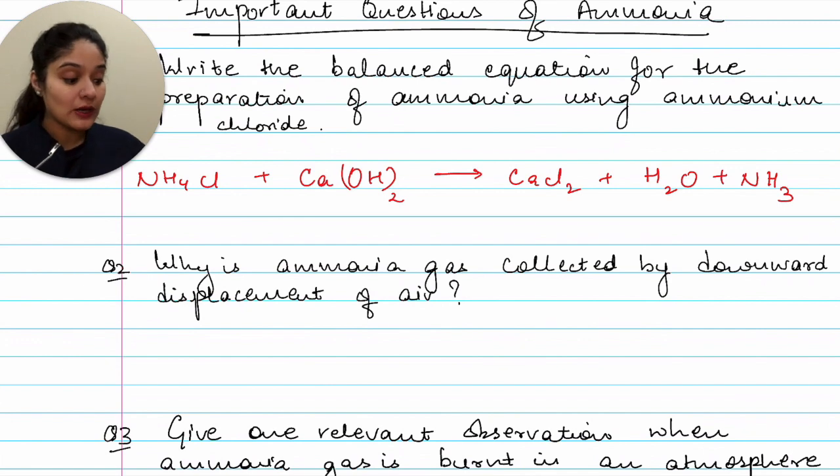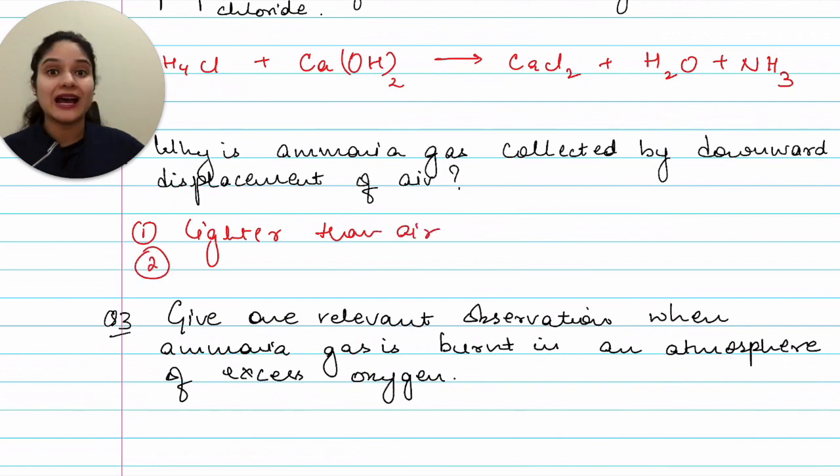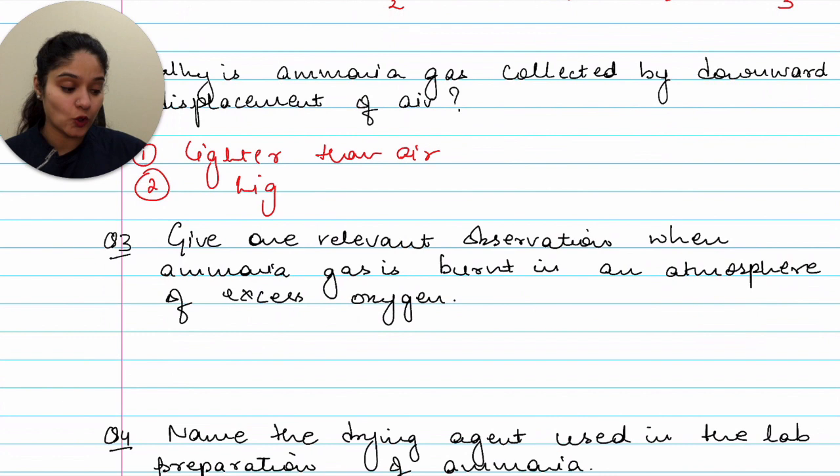Moving on, why is ammonia gas collected by downward displacement of air? So first reason is it is lighter than air. And second is it's highly soluble in water. So we cannot collect it with water in any form. We cannot collect it over water. That is because it is highly soluble in water.